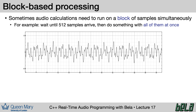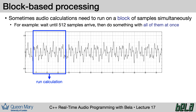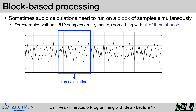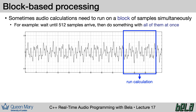What do we mean by block-based processing? Block-based processing refers to audio calculations that run on a group or block of samples all simultaneously. Typically the idea is that we wait for a collection of samples to arrive, and then once they've arrived we can process them all at once. For example, we might have some calculation that we want to run every 512 samples. We wait for the 512 samples to arrive, then we run a calculation on all of them at once. We then go on and wait for the next 512 samples before we run the calculation again, and we can continue block by block indefinitely.